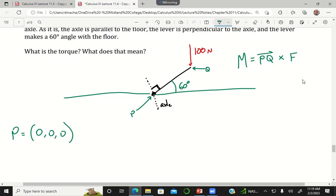Then for Q, the coordinates of this point Q at the end of the one meter lever, I'm going to go ahead and say that this has z coordinate zero.